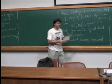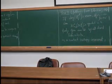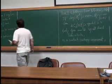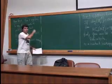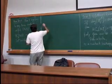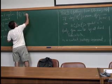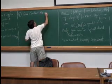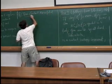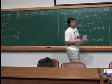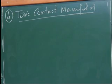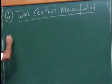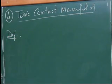Let me first define what a toric contact manifold is. I am more comfortable dealing with symplectic manifolds than contact manifolds, so I'll define toric contact manifolds with the help of symplectic cones. A symplectic cone is a triple (M, omega, X) where (M, omega) is a symplectic manifold, and X is a vector field whose flow is conformally symplectic, proper, and pulls back the symplectic form at time t to e^t times omega. X is called the Liouville vector field.